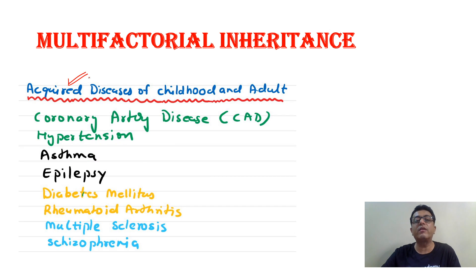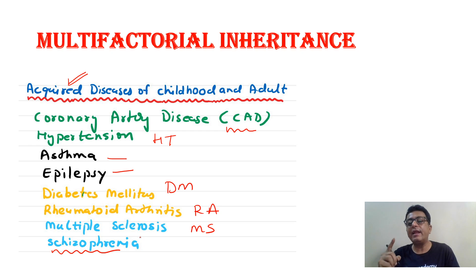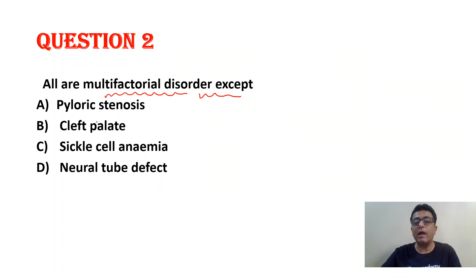A few acquired diseases in children and adults that are multifactorial: coronary artery disease, hypertension, asthma, epilepsy, diabetes mellitus, rheumatoid arthritis, multiple sclerosis, and schizophrenia. Multifactorial inheritance means two or more genes with additive effect of environment responsible for the condition. So pyloric stenosis is multifactorial, cleft palate is multifactorial, neural tube defect is multifactorial.